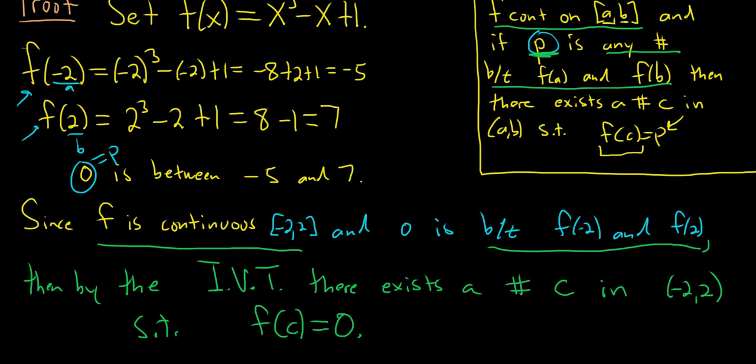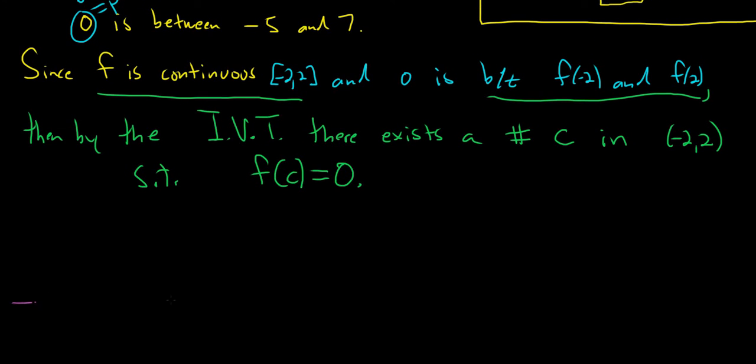So f of x was x cubed minus x plus 1. So what we have here is that f of c is equal to 0. So thus, what does that mean? Well, f of c means you just plug in c. So it'll be c cubed minus c plus 1 equals 0. Look at that. There is a number c that makes this equation true. And the number c is between negative 2 and 2. That means it's a real number.